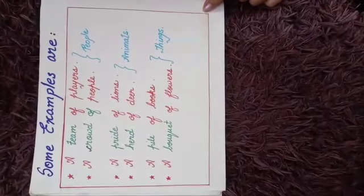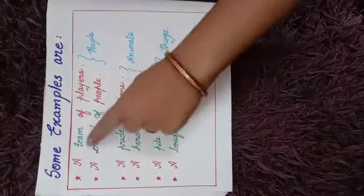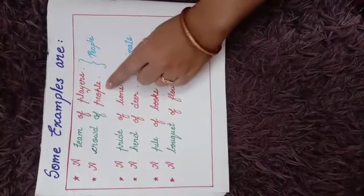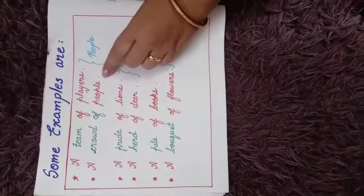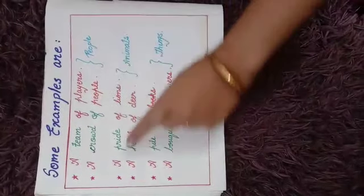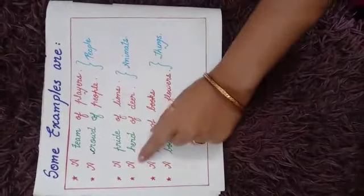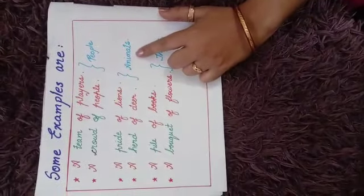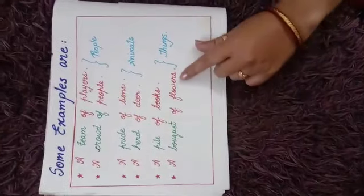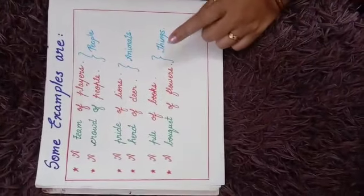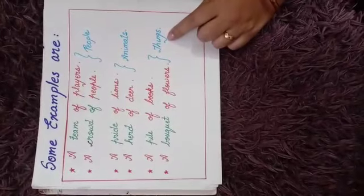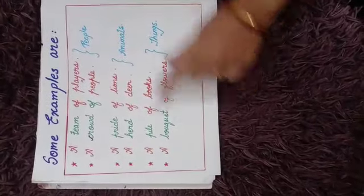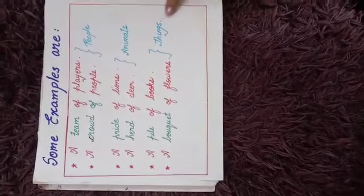Some more examples to understand the concept better. A team of players. A crowd of people. These two are examples of collective nouns for people. A pride of lions. A herd of deer — examples of collective nouns for animals. A pile of books. A bouquet of flowers — examples of collective nouns for things. So, collective nouns are words used for a group of people, animals or things.